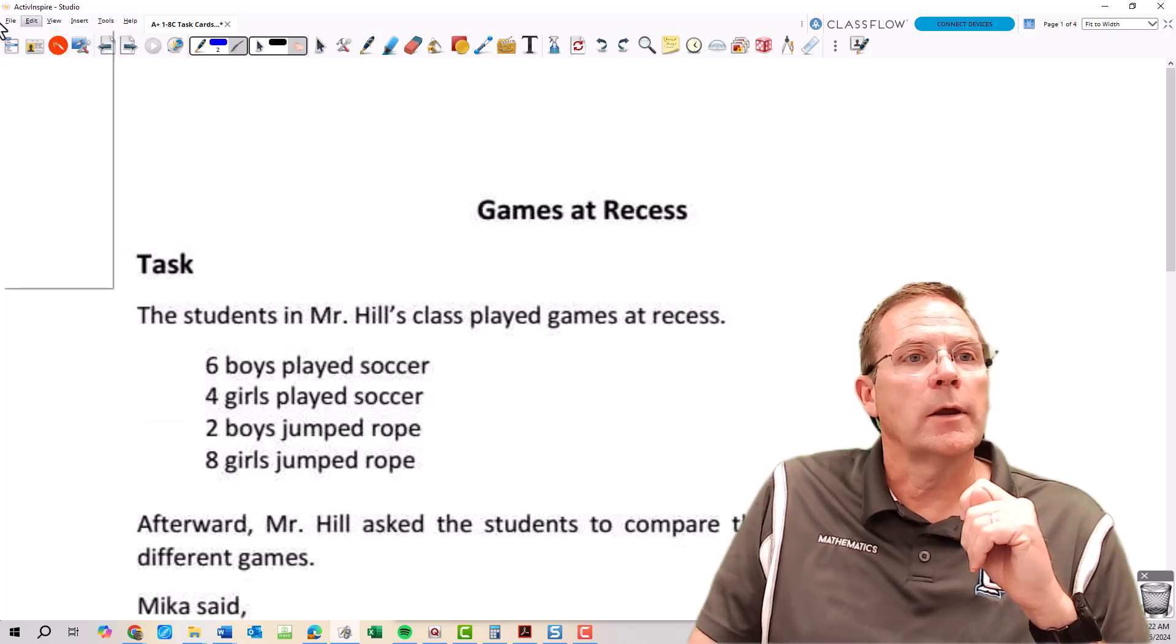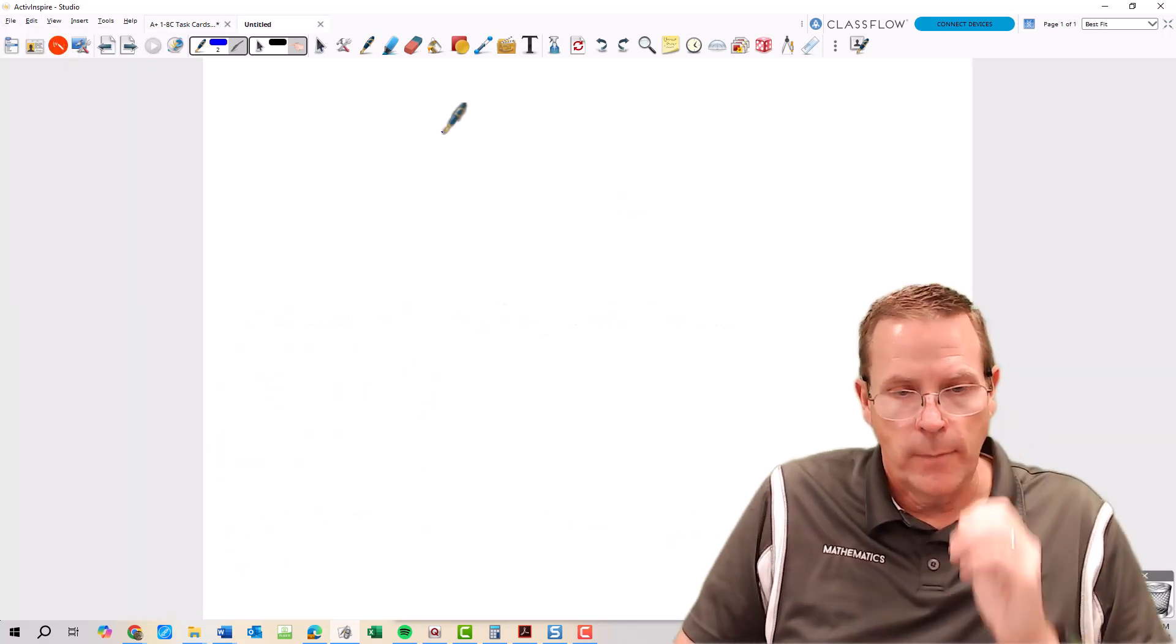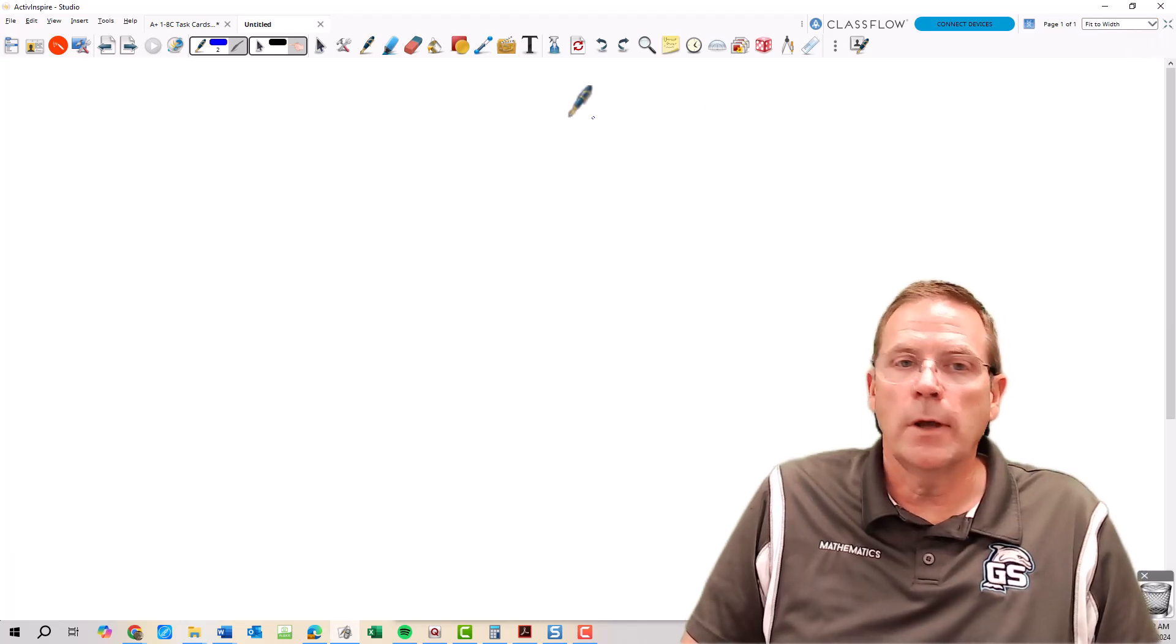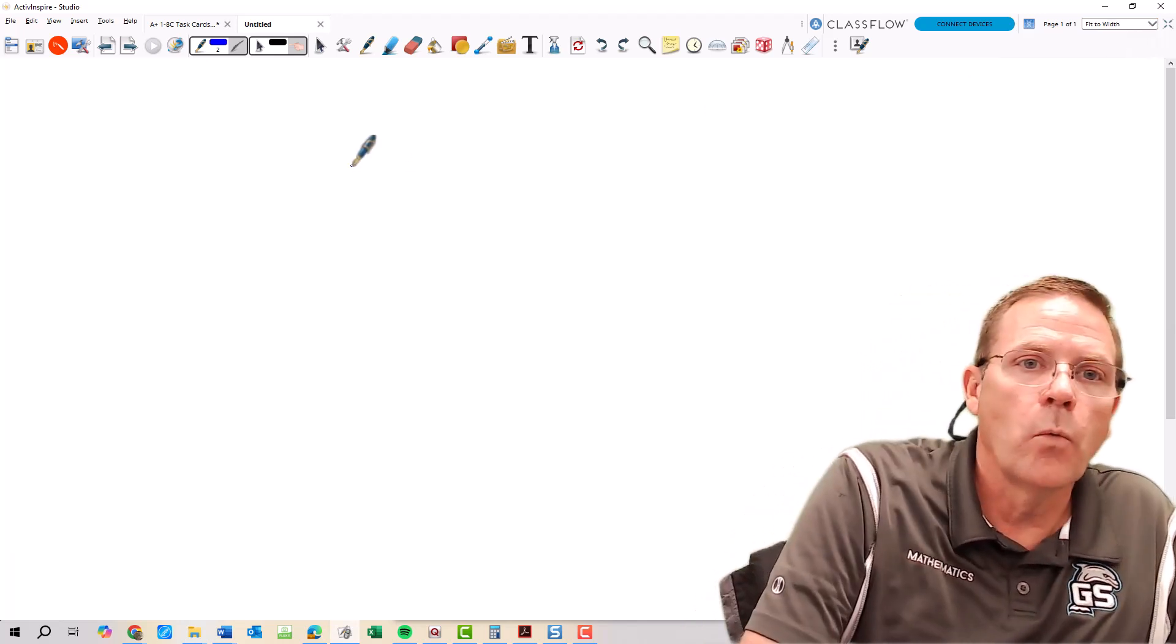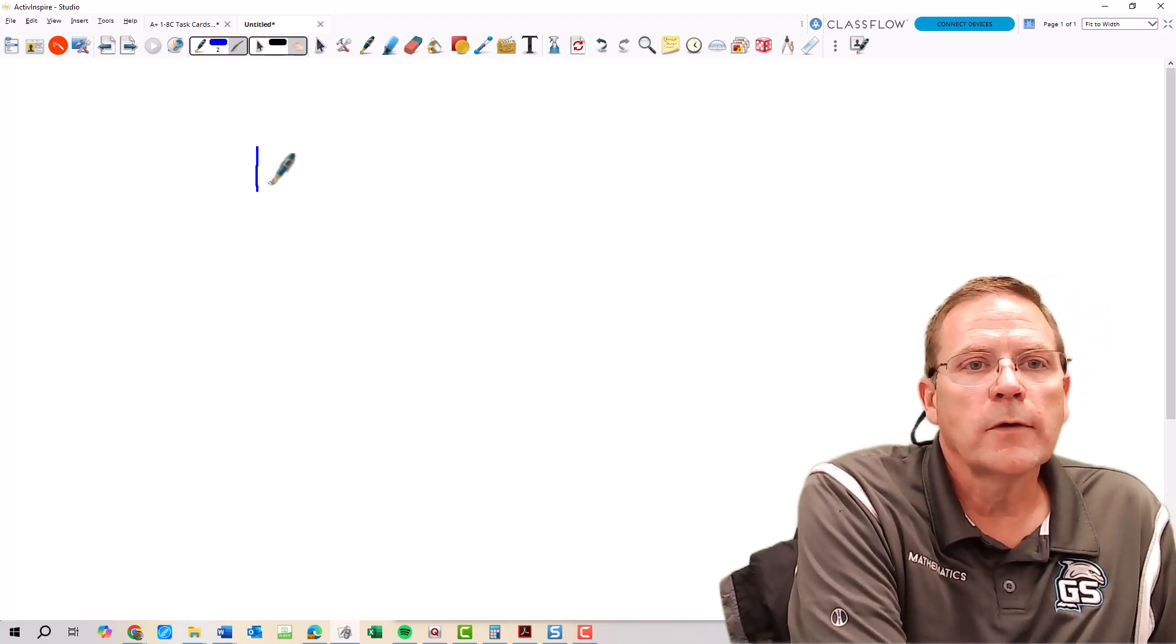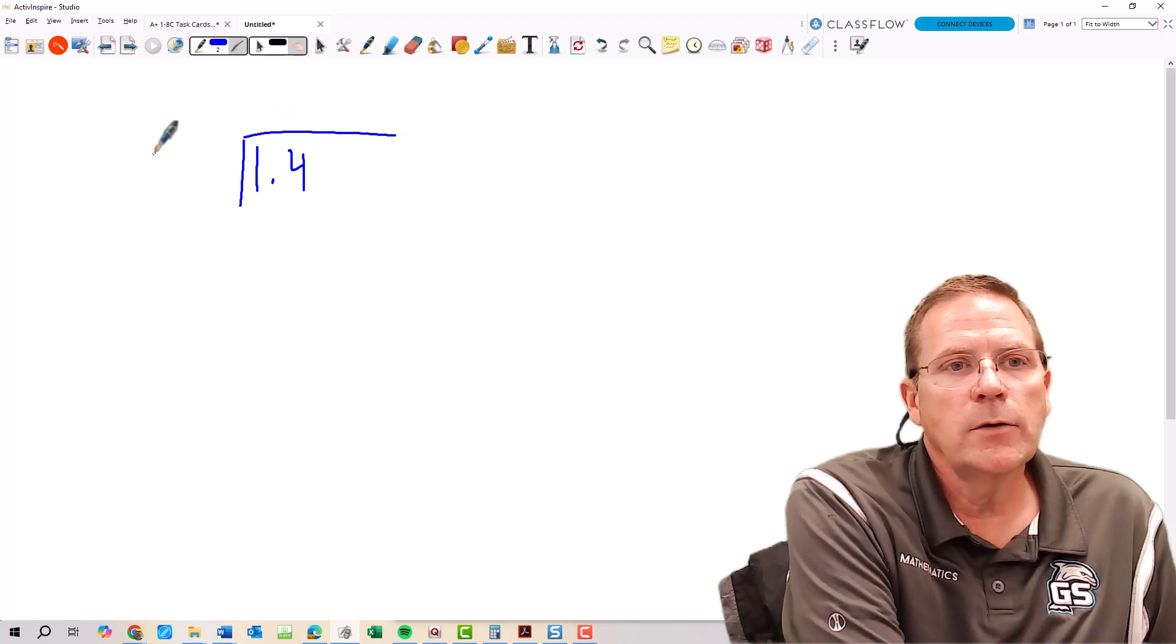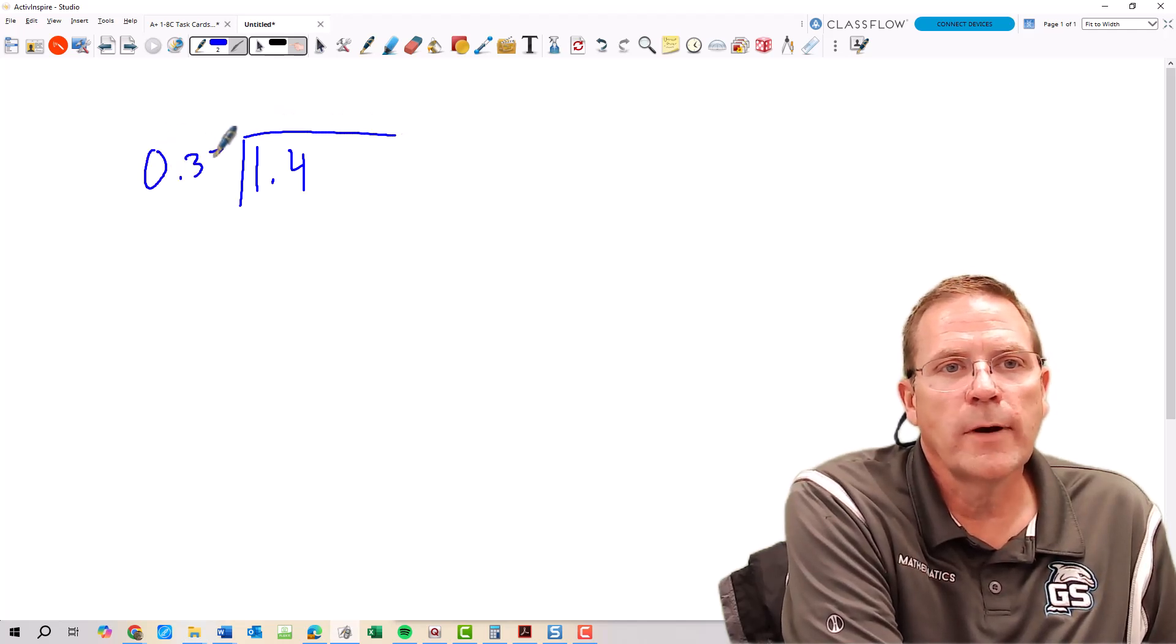So we're going to take and give ourselves a new flip chart, and on this flip chart let's go ahead and do our page width. Now we had 1.4 was our first number, so it's going to be the number that goes in the house, and it's going to divide into 0.35 sections.